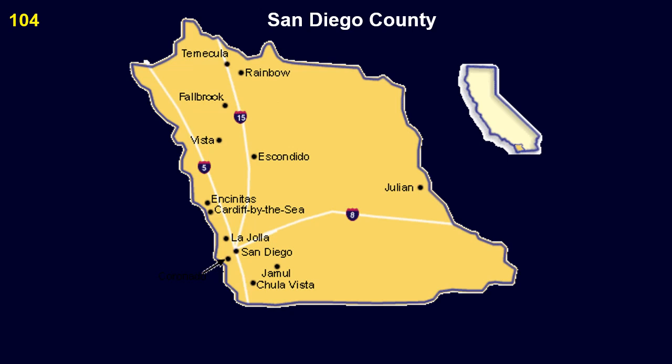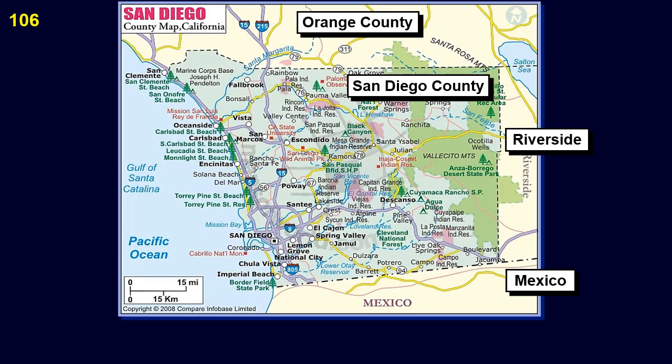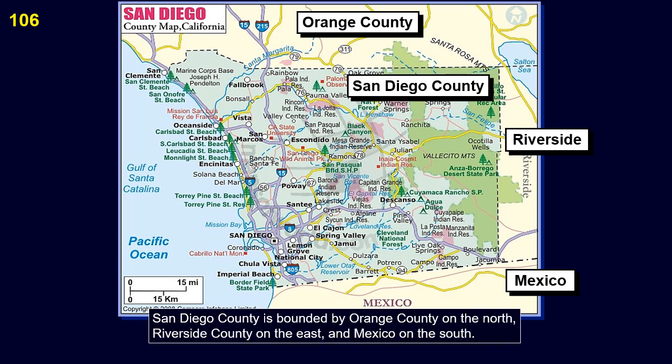This is a map of San Diego County. San Diego County is bounded by Orange County on the north, Riverside County on the east, and Mexico on the south.